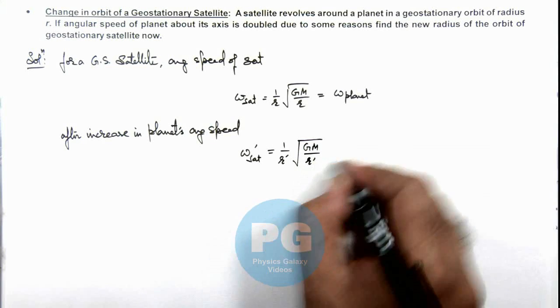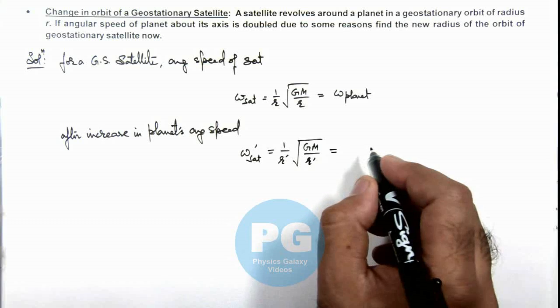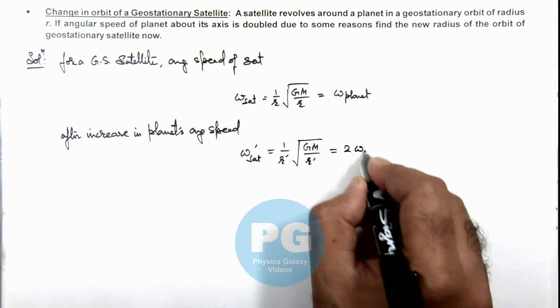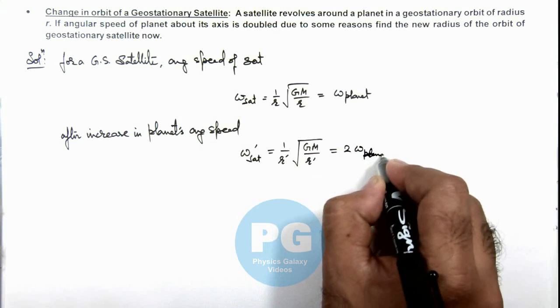This should be equal to the new angular speed of the planet, which is given as twice the initial angular speed of the planet.